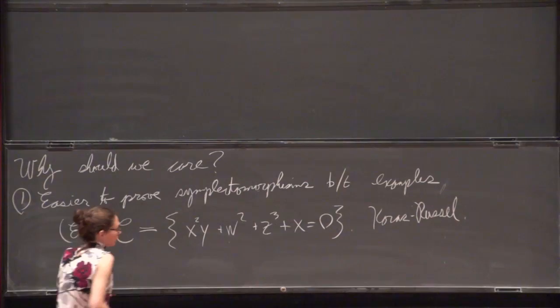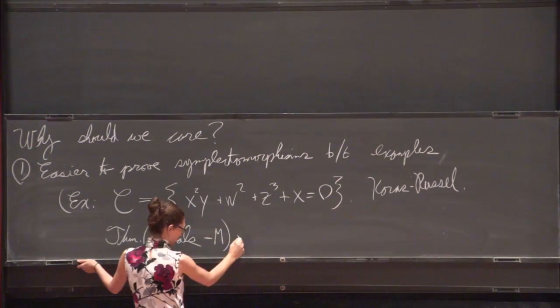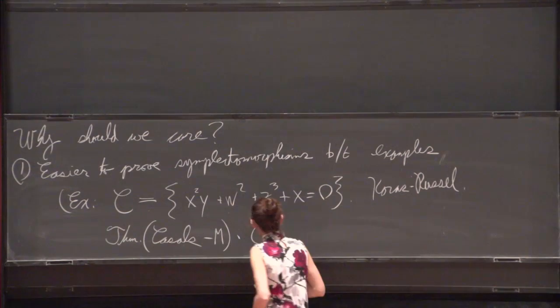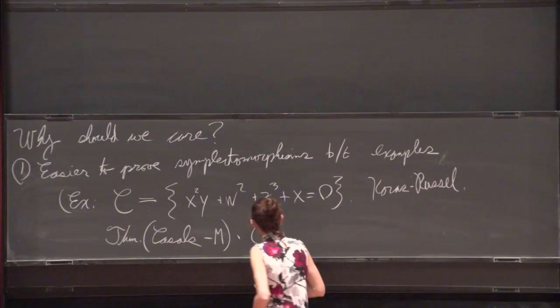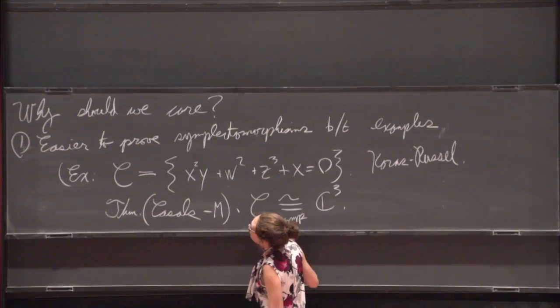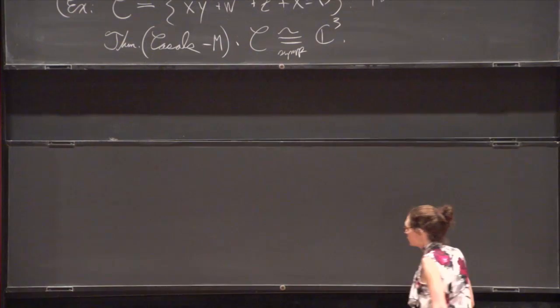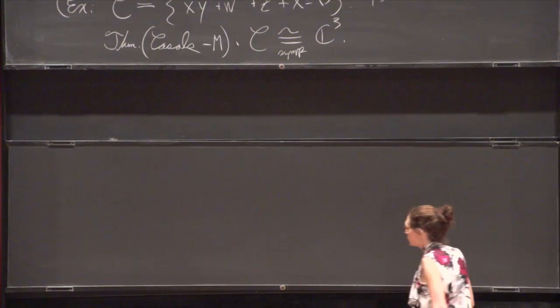So we're able to prove using these methods, so I guess we could call this a theorem. By the way, everything I'm going to say today is joint work with Roger Casals. The theorem is that C is actually symplectomorphic to C^3, and I don't really know any way to prove this without going through contact geometry.